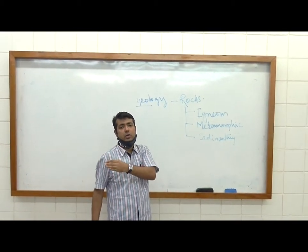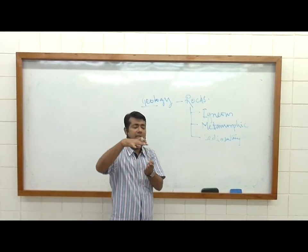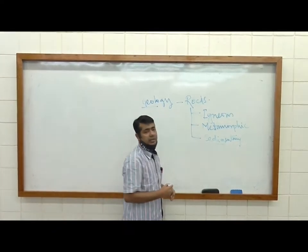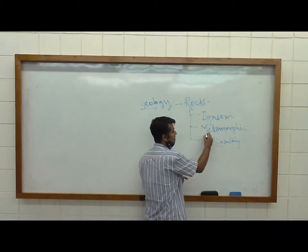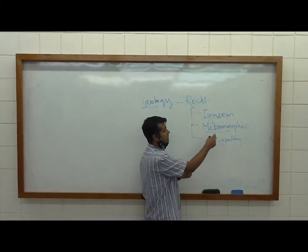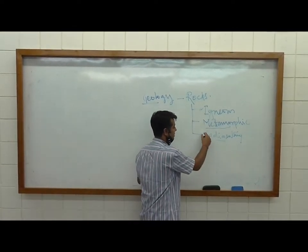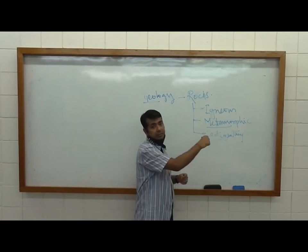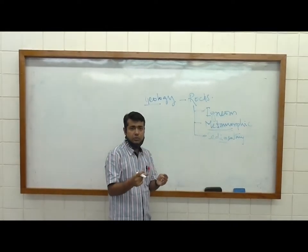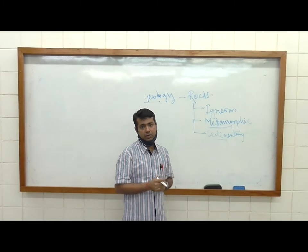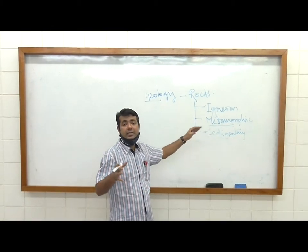The weathered material is transported to another place where it is compacted and cemented to make sedimentary rock — that is why there is 'sediment' in the name. Metamorphic rock is the rock which comes by the process of metamorphism of previous rocks — it can be igneous or sedimentary rock. In fact, metamorphic rock can again be metamorphosed to become another metamorphic rock. This is a brief discussion about the three types of rocks we get in the earth.